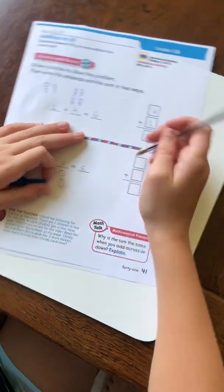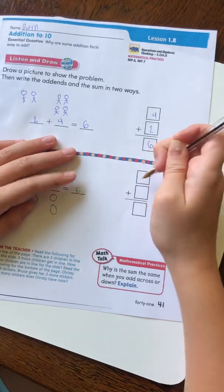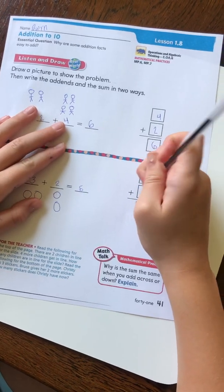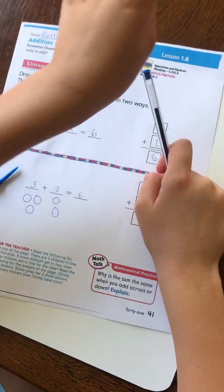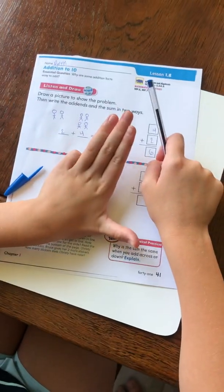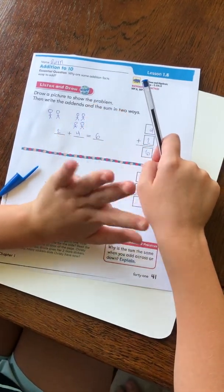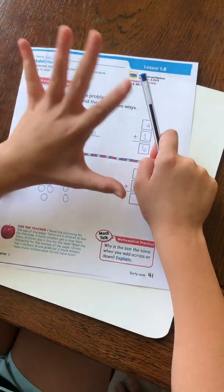And then, we have to write it again over here. So we would do three plus two, and we'd go in our hand. I have three, and I add one, two, which gives me a full hand. And you have five fingers on one hand, so it equals five.